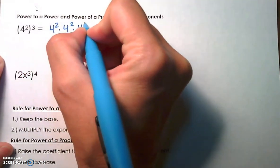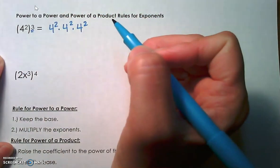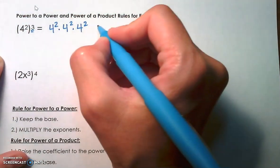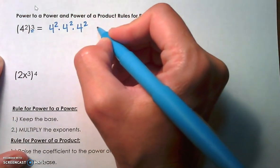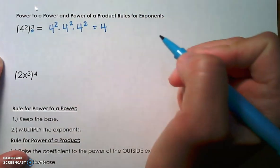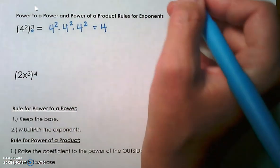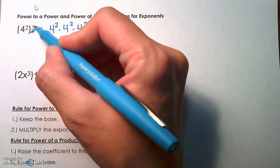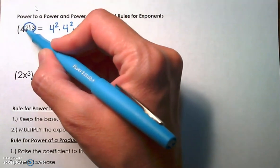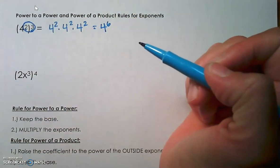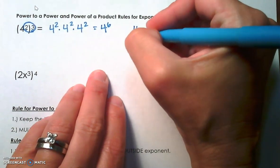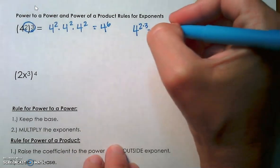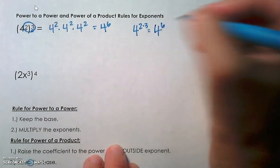If we write 4 squared out 3 times, because 3 is the outside exponent, it's saying 4 squared is a factor 3 times. We go back to the product rule, which tells us to keep the base — which is 4 — and add the exponents. So 2 plus 2 plus 2 gives us 6. We can get that 6 if we take the outside exponent and multiply it by the inside exponent. That's our power to a power rule: keep the base and multiply 2 times 3, giving us 4 to the sixth power.